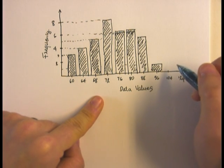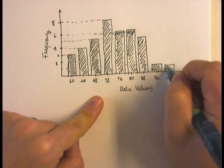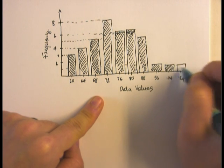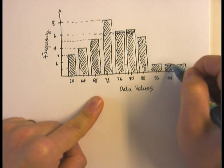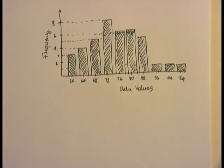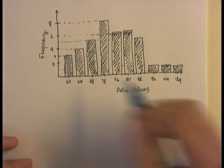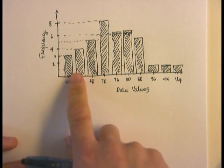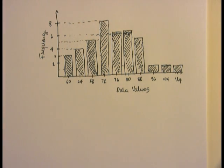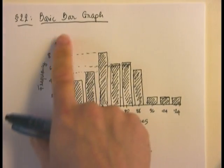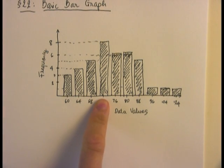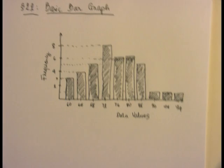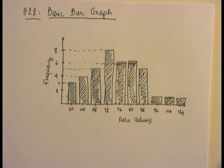That's how we build a basic bar graph for individual data values. As you notice, I left a few gaps here between the bars. When you're constructing a basic bar graph, leaving gaps or no gaps is all your choice—it doesn't really matter. Later on, if we learn how to build a histogram, then definitely we do not want to leave gaps in between. That's how we build a basic bar graph.